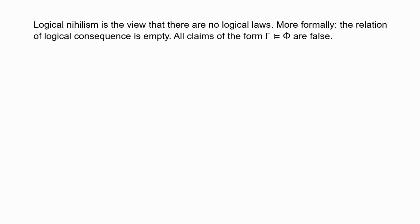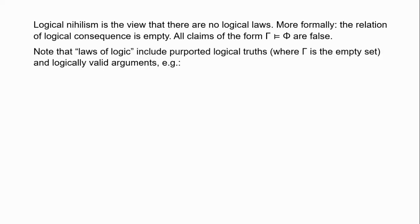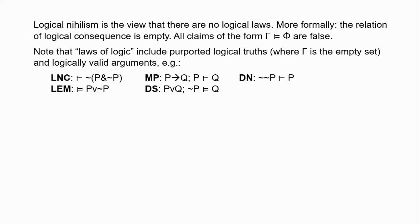To be more clear about the scope of this claim: what exactly do we mean by a logical law? Laws of logic include the logical truths, or logically valid formulas, such as the law of non-contradiction or the law of the excluded middle. Also logically valid arguments: modus ponens, disjunctive syllogism, double negation elimination, conjunction elimination, etc. The logical nihilist holds that all of these claims are false.